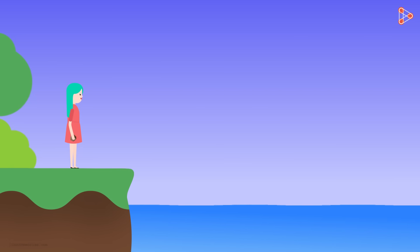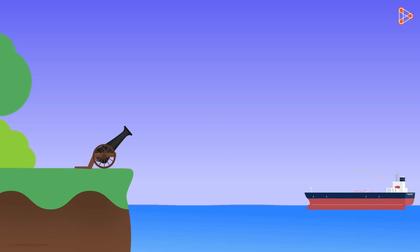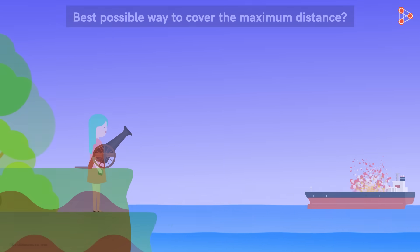If we are on a cliff next to the sea, it's always tempting to randomly throw stones into the sea. It's so much fun, right? But have you ever wondered about the best possible way to throw a stone such that it covers the maximum distance? Knowing this was certainly important in the past to attack the enemy ship.